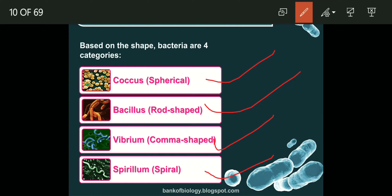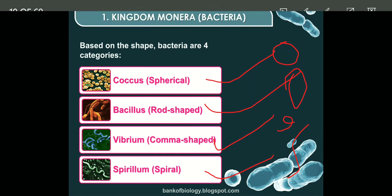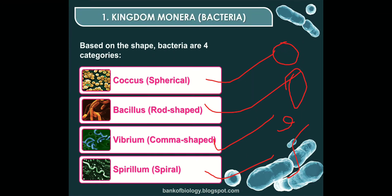Coccus means a spherical, round shape. Bacillus is a rod shape. Vibrio is a comma shape. And spirillum is like a thread-like structure in a spiral form. These are all the shapes of bacteria, classified into four categories.